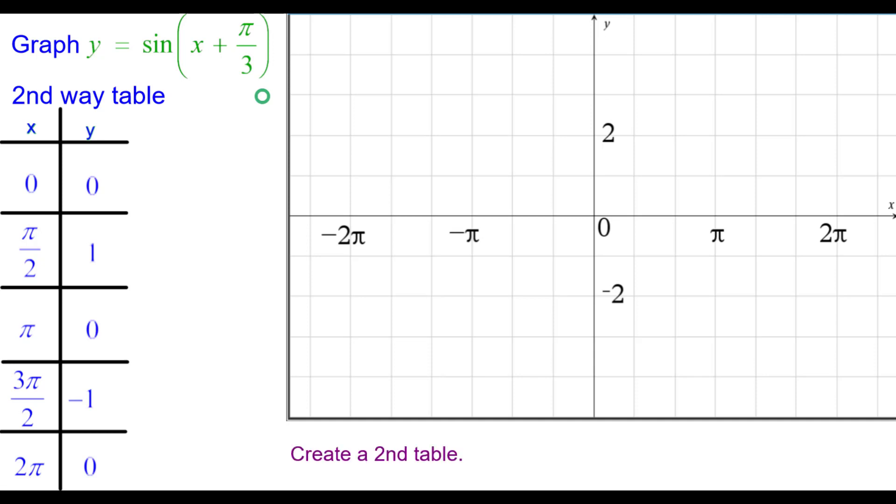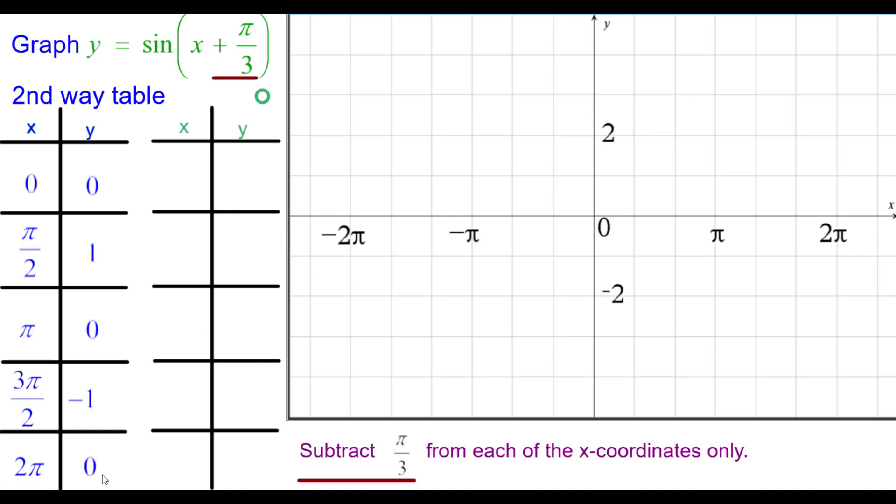And you should just know these values along the axis. We do need to create a second table for our graph. We look at the parameters and it looks like we're going to subtract pi over 3 from each of the x coordinates. That's the only thing we're going to do here because we have to get it back because we're adding plus pi over 3 here. We subtract pi over 3.